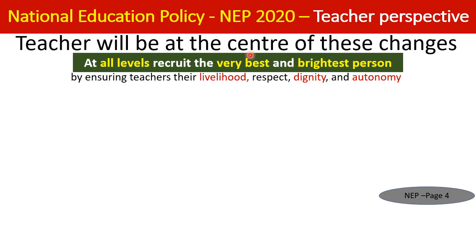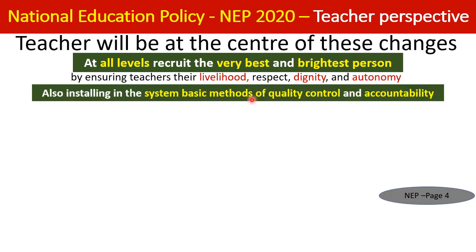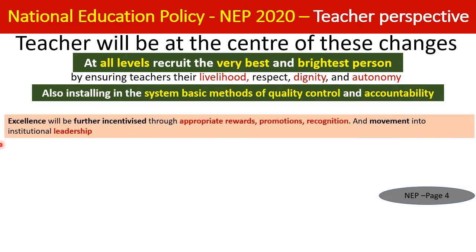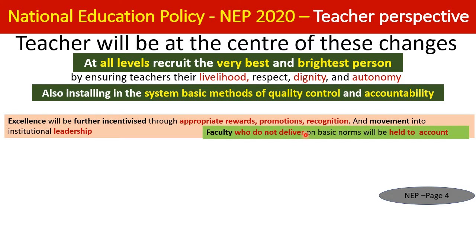Autonomy does not mean full freedom — there will be basic systematic methods of quality control to maintain teacher quality. Accountability is fixed on teachers. If they excel, they get incentives, rewards, promotions, and recognition. If they do not deliver, they are held accountable and must explain their performance.